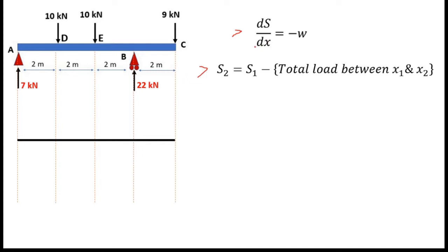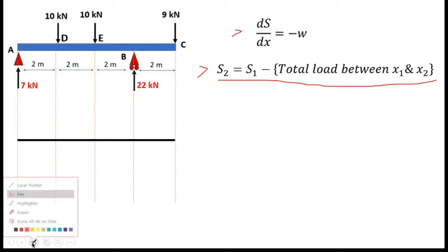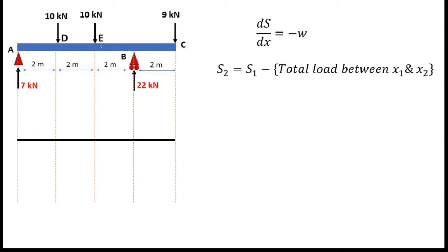The first relationship gives the slope of the shear force diagram, and this second relationship is used for finding values of the shear force. The slope equation is: dS/dx = -w. As you can see, there are no distributed loads on this beam, so that means the slope equals zero — which means all segments will have horizontal straight lines. We will see how we draw the shear force diagram for this beam.